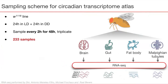For that, we took one commonly used white 1118 fly line and performed experiments under the classical setup. We sampled this fly line every two hours for 48 hours in triplicate. As we were interested in tissue specificity of the circadian rhythm, we also sampled four major tissues: brain, gut, fat body — which is orthologous to the human liver — and Malpighian tubules — which is orthologous to the human kidneys. In total, we obtained 233 transcriptomes, which is already quite a substantial amount.